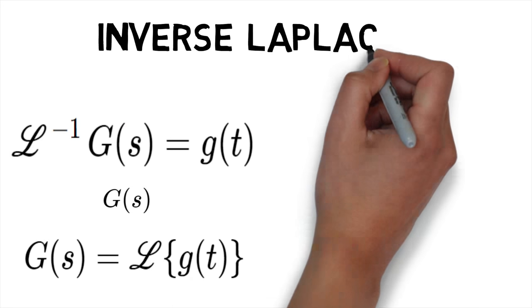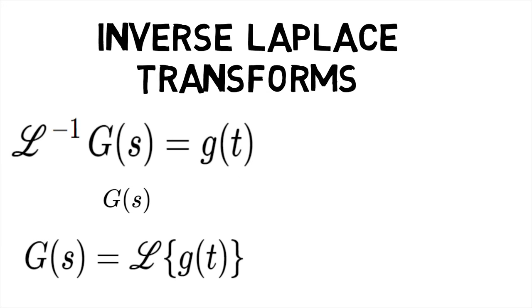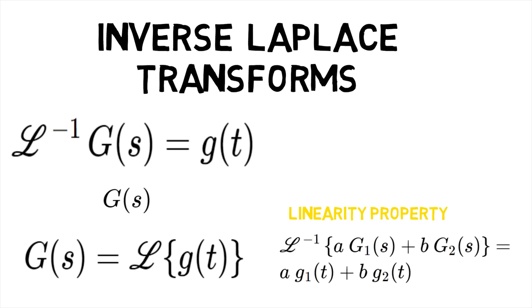There are two common properties that are essential to inverse Laplace transforms. First is the linearity property, which states that L^(-1)[aG₁(s) + bG₂(s)] = ag₁(t) + bg₂(t).